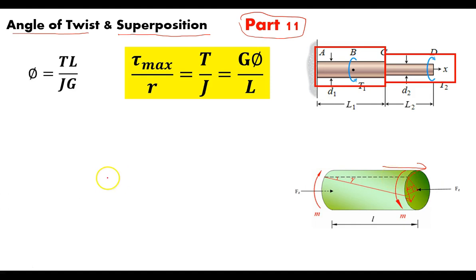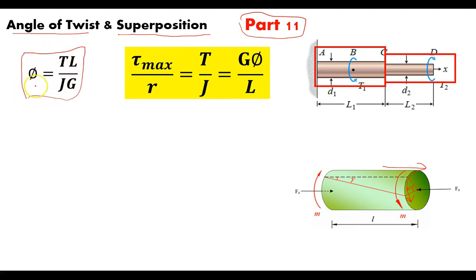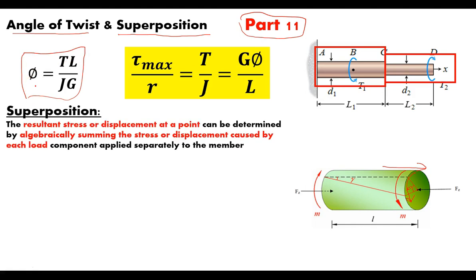We get the angle of twist equation through algebraic manipulation, looking at the torque, the polar moment of inertia, the shear modulus, and the length of the shaft. We multiply both sides by the length and divide by the polar moment of inertia, and we're left with the equation for the angle of twist.